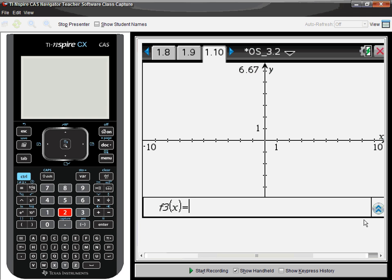Hi, this is Tom Reardon, what's new in OS 3.2. Easy conic graphing.